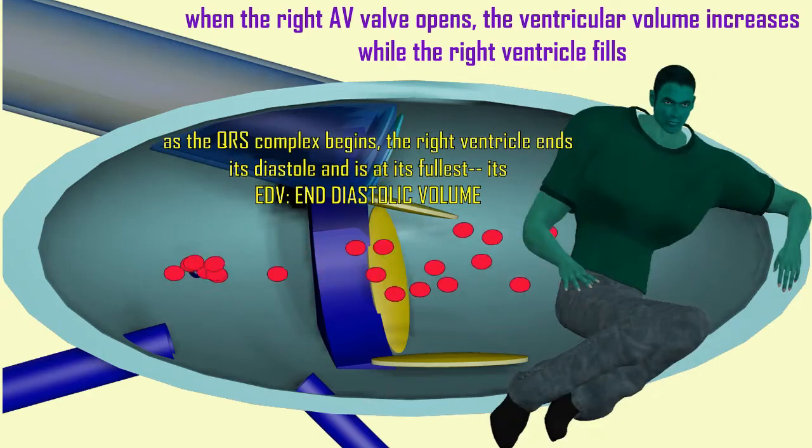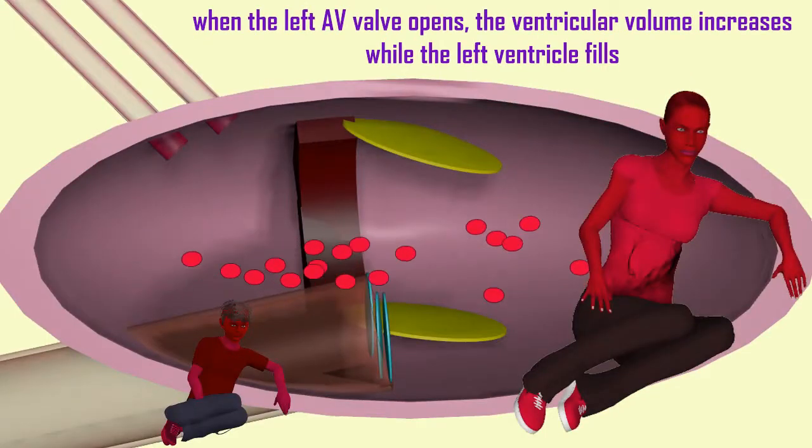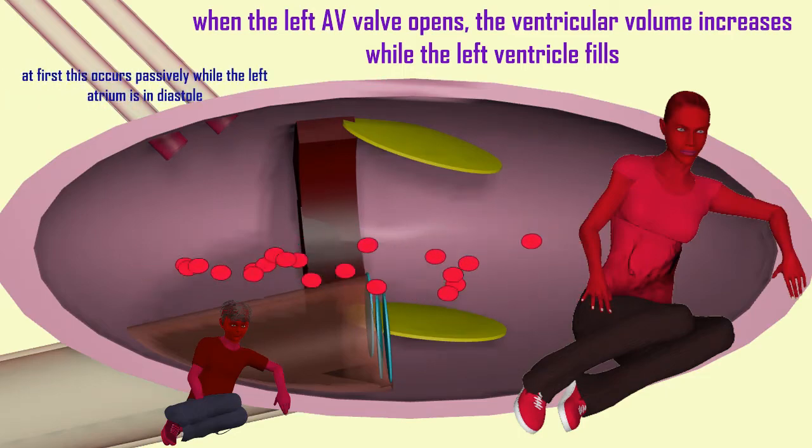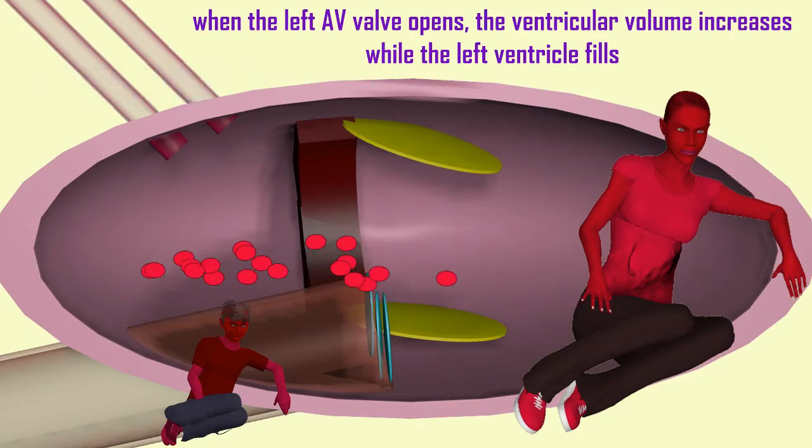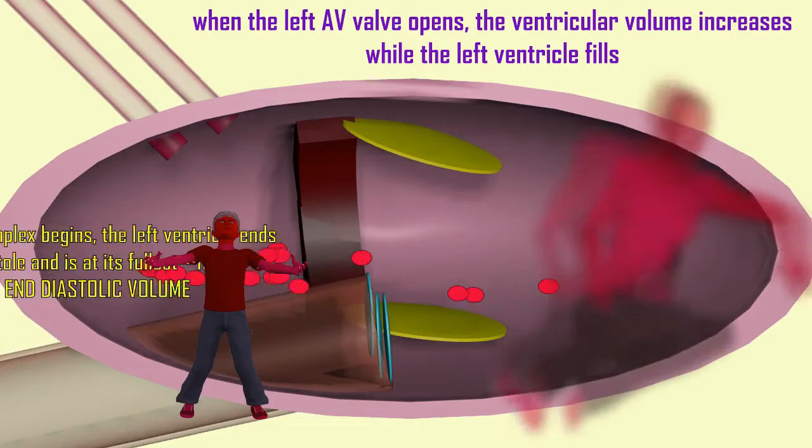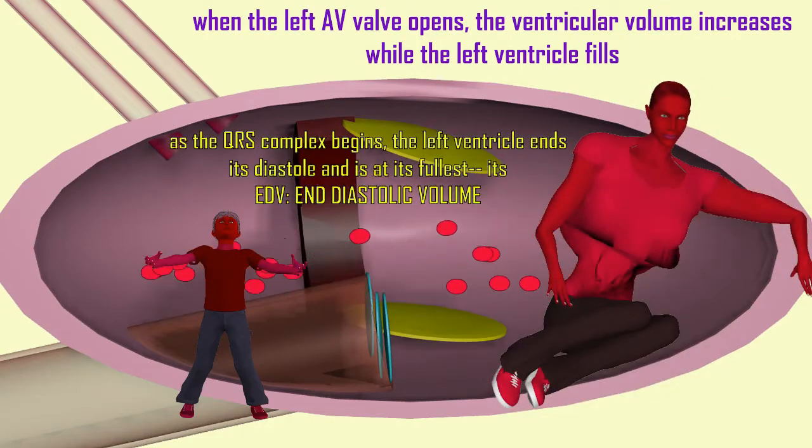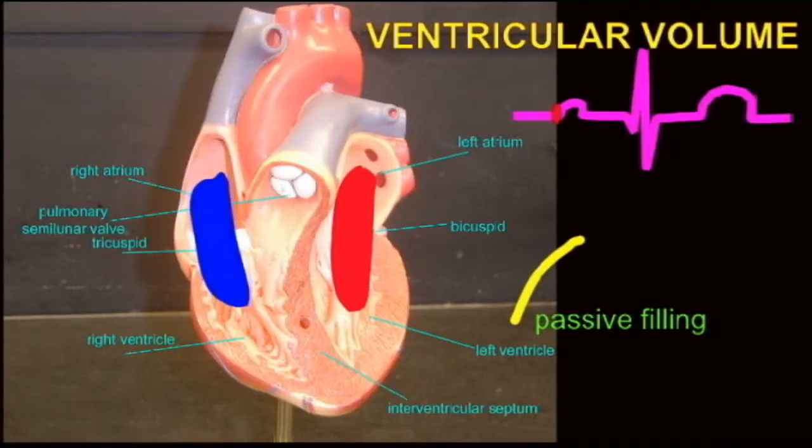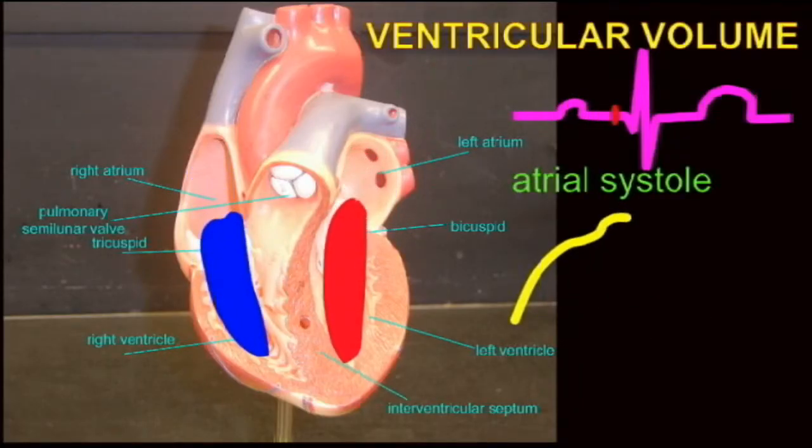As the QRS complex begins and the atria end their systole, the ventricles are now at their fullest point, their greatest volume, and this is known as the end diastolic volume. When the ventricles are done their diastole, they are at their fullest, given that they have been filling during the end portion of their diastole, and their fullest volume is known as the end diastolic volume. This applies to both the right ventricle and the left ventricle.